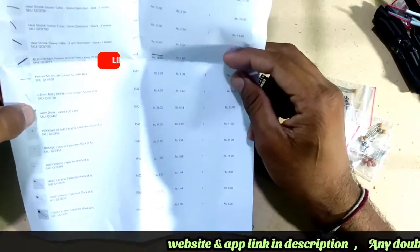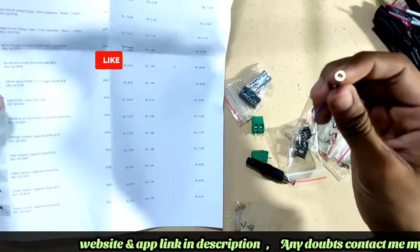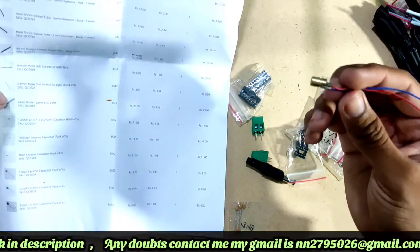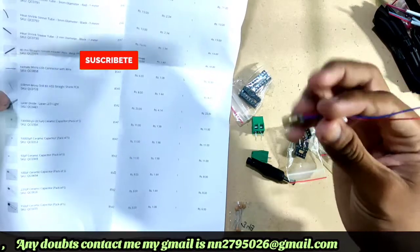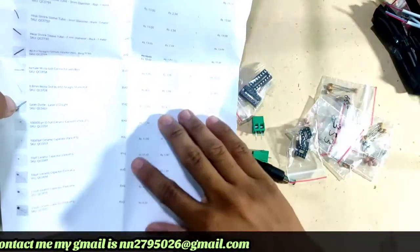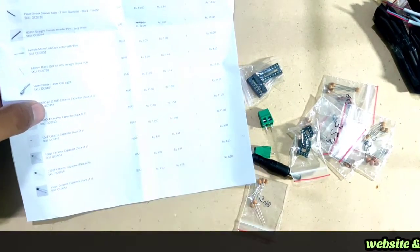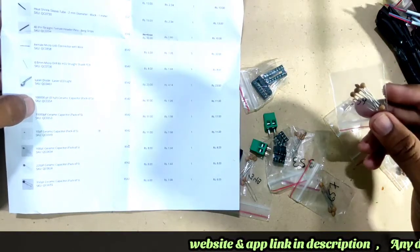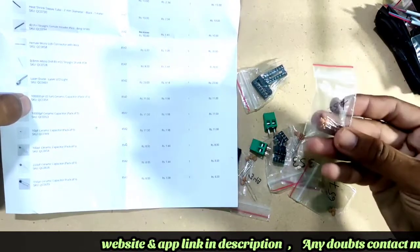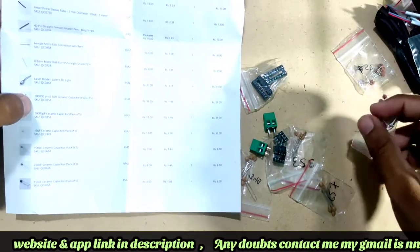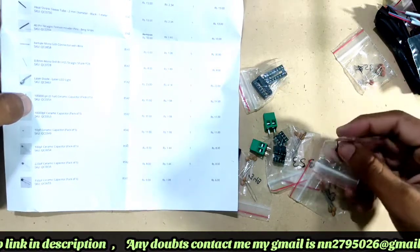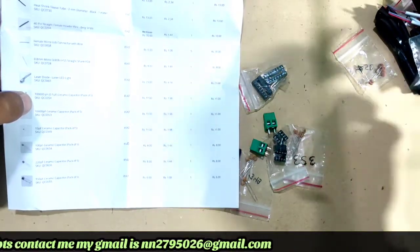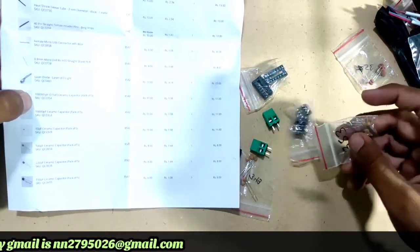Laser light diode. 0.1 UF ceramic capacitor 5 pieces. I am going to check the quantity 5 pieces. 10 PF, 100 PF, 120 PF, 150 PF.